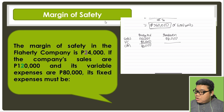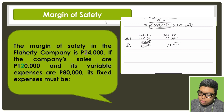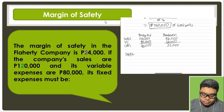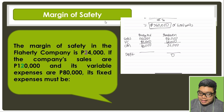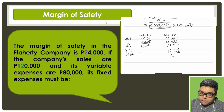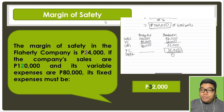We multiply one-third by 96,000 to get a contribution margin of 32,000. So variable cost would be 96,000 minus 32,000, which is 64,000. At break-even sales, profit is zero. Therefore, if contribution margin is 32,000, fixed cost must also be 32,000 to achieve zero profit. That is our answer for this problem.